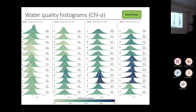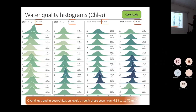Here we have the median for each month for chlorophyll in milligrams per cubic meter. A lot of things can be noted from this graph. The first is a monotonic increase in chlorophyll during these years from 2018 to 2021.